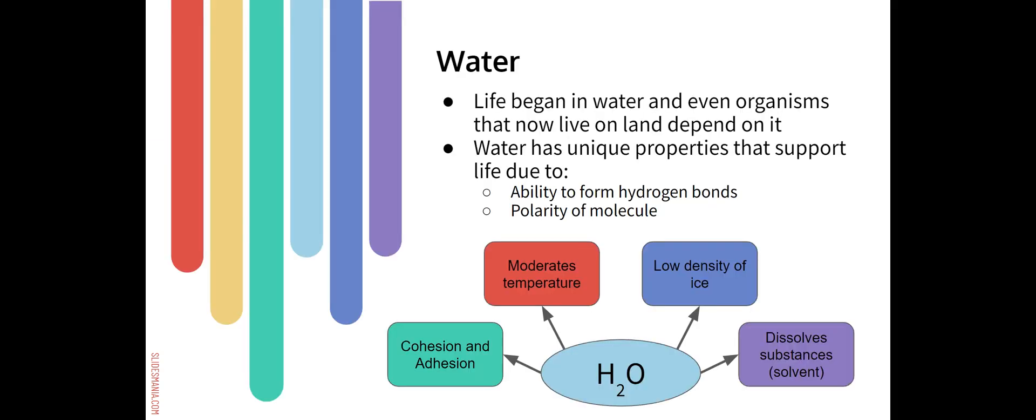If you think about the evolutionary beginnings of life on Earth, those beginnings happened in the water. Life evolved in the water and obviously there are still many organisms that live in an aquatic environment, but even organisms that now live on land, like humans, still depend on water. You can think about our cells being mostly water on the inside. Our tissues are bathed in water-based fluids. Our blood is mostly water.